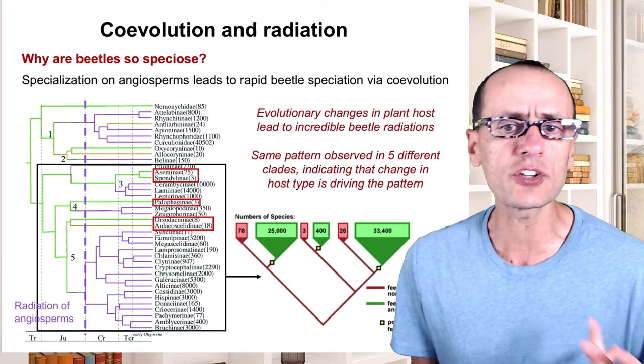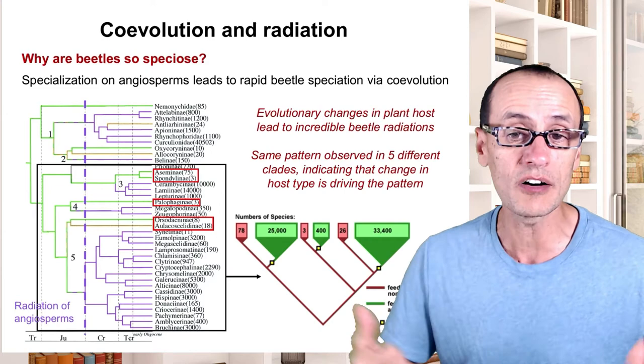So what about the other components of the Ehrlich and Raven system? That is, the escalation of defensive chemistries. The terminology was very typical of the time — Ehrlich and Raven were writing during the Cold War era.